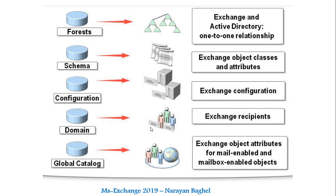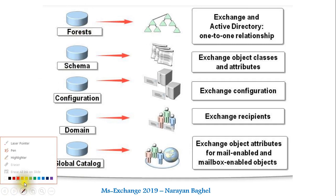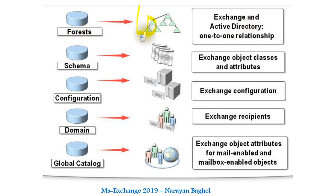Once again, as I spoke about in my previous two videos, the key components — forest, schema, configuration, domain, and global catalog — are the backbone of Exchange Server deployment. In short, a forest contains multiple trees, and all domain controllers within that forest keep exchanging information between all the trees, which is a one-to-one relationship.